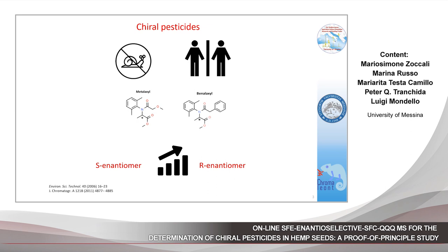Considering again metalaxil and benalaxil, the R enantiomer shows a faster degradation in soil with respect to the S enantiomer. In view of such a perspective, the use of racemic mixtures of pesticides should be reconsidered. In fact, the use of enantiopure pesticides would lead to a great reduction of the amount of pesticides released into the environment.